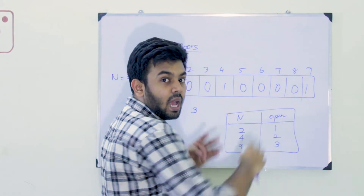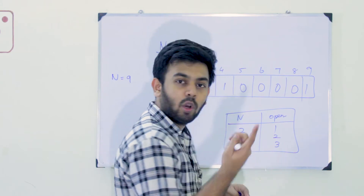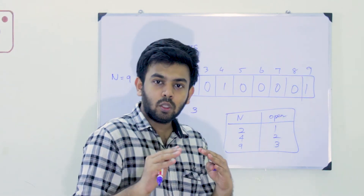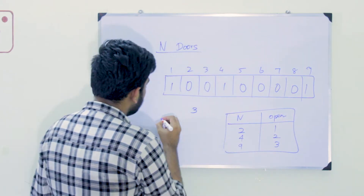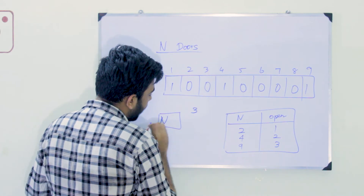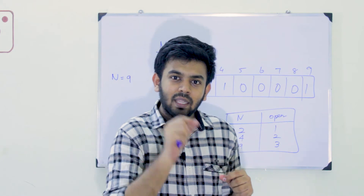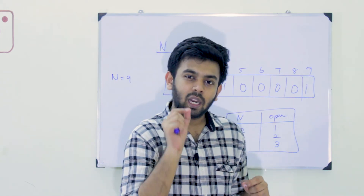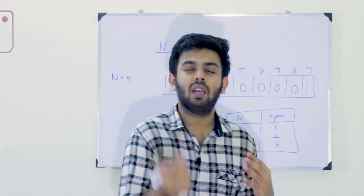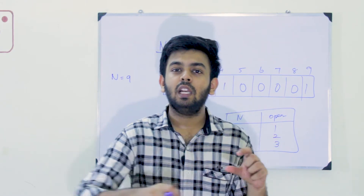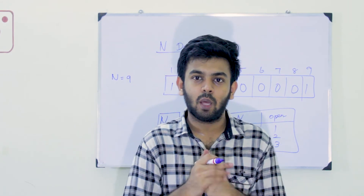The perfect squares are 1, 4, 9. Those same doors will be open. So if you look at N equal to 9, the doors open are 1, 4, and 9 - three doors. In any perfect square, it will be open at that same door. So if you look at a number, count how many perfect squares exist up to N.